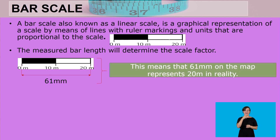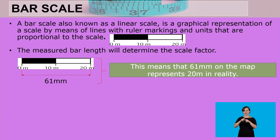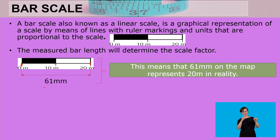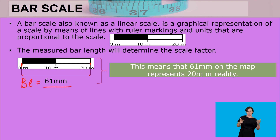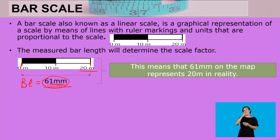We are given that whatever size this bar is, it represents so many meters in reality. The measured bar length will determine the scale factor. The balance — meaning if you measure from where zero starts to where 20 ends — gives us 61 millimeters. So 61 millimeters on the map represents 20 meters in reality.